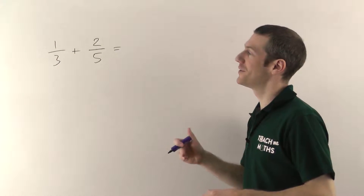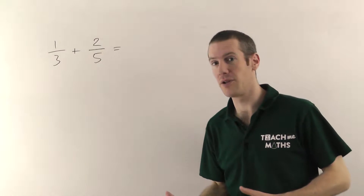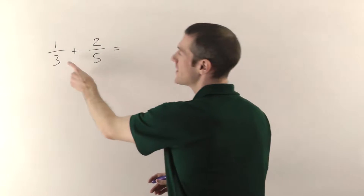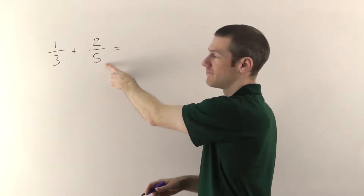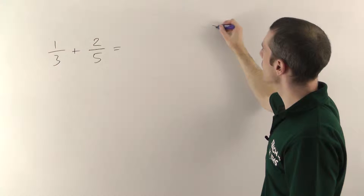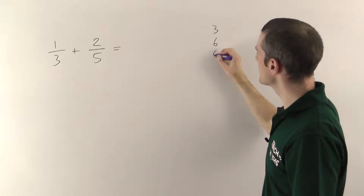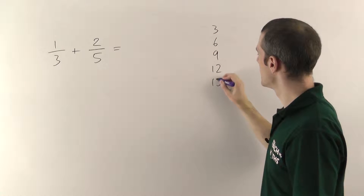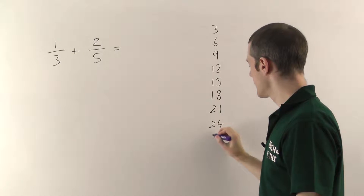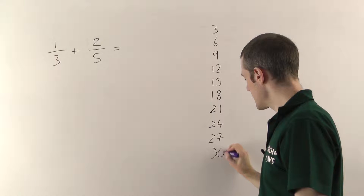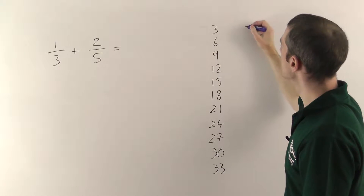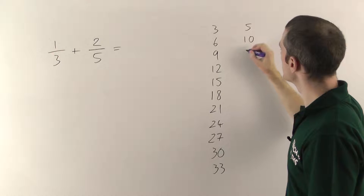You may remember the lowest common denominator from school — sometimes it's called the lowest common multiple. Whatever you call it, it's essentially the smallest number that's in both times tables. If I write out my three times table: 3, 6, 9, 12... and the five times table: 5, 10, 15... you're looking for numbers that are in both times tables.